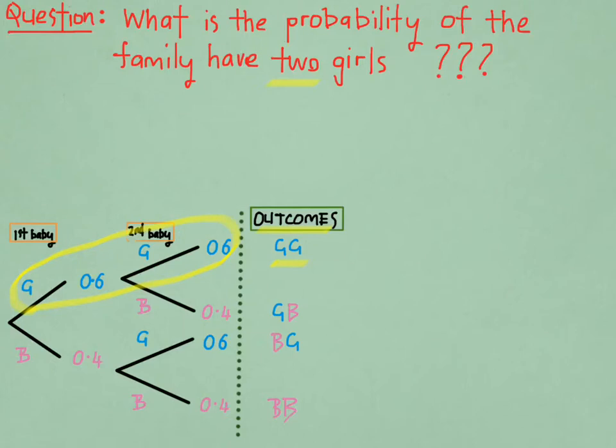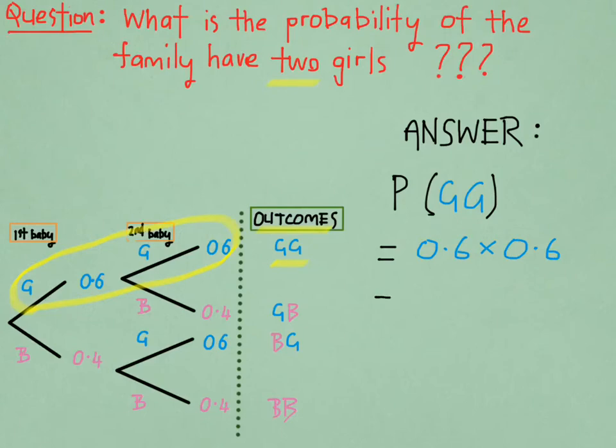So, in terms of calculating the probability, this becomes reasonably straightforward. So, let's document the answer now. So there's our two girls, and we generally note probability like that. So that just means the probability of two girls. And then equals 0.6 times 0.6. So that's the two 0.6's from along that probability tree. The first baby and the second baby. Because we want two girls together, we're going to multiply those two probabilities. And we end up getting an answer of 0.36. So that is the probability of the family having two girls.